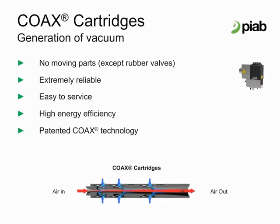PIAB uses the COAX principle in two of our vacuum pumps for the conveying line of products: the PI Basic pump, used with the PIFLOW INF conveyors, and the PI Premium pump, which is used on the PIFLOW P and the PIFLOW T conveyors. Both use our unique high efficiency multi-stage vacuum generator technology to drive the vacuum conveying process.